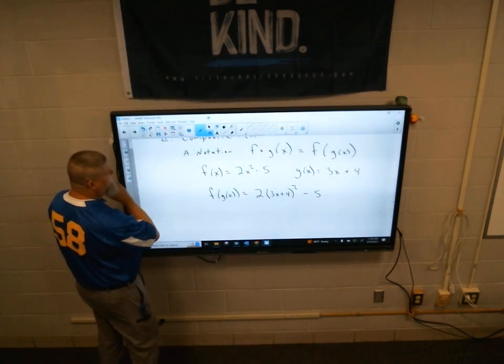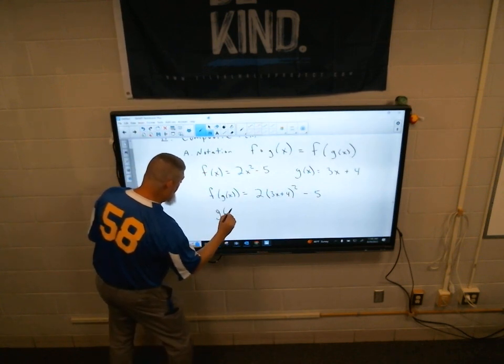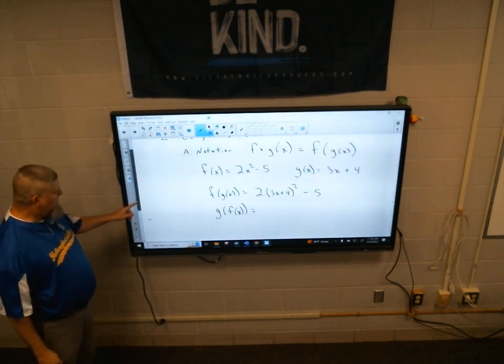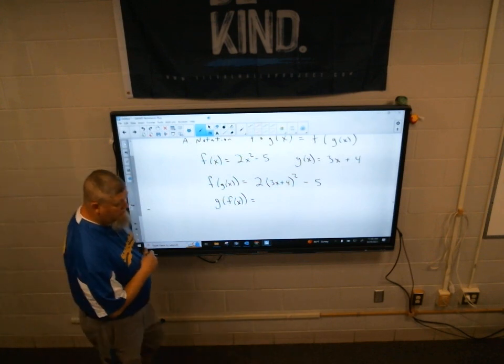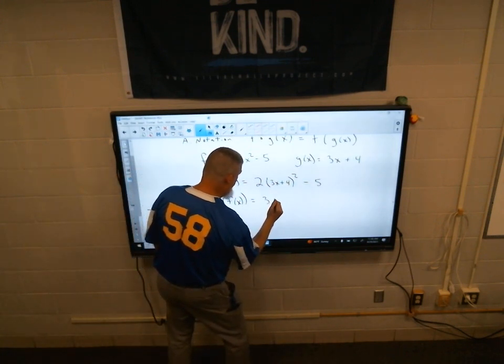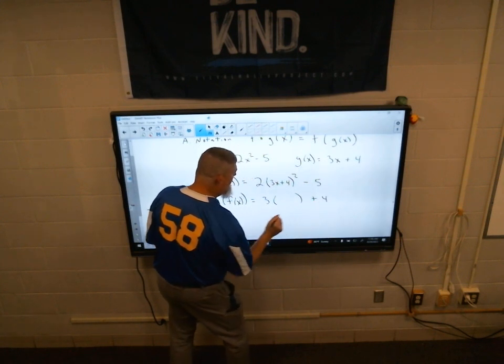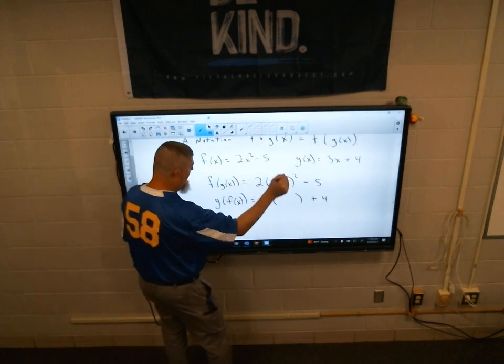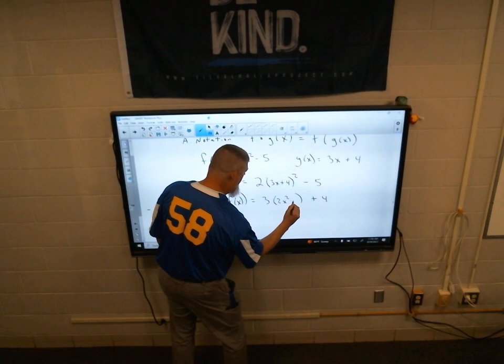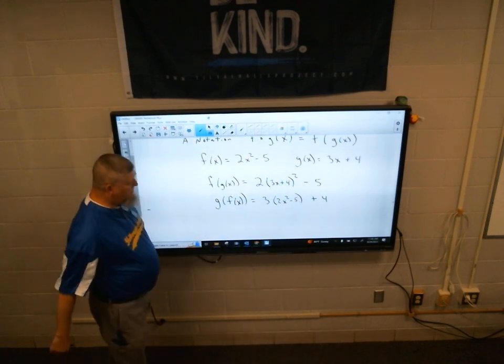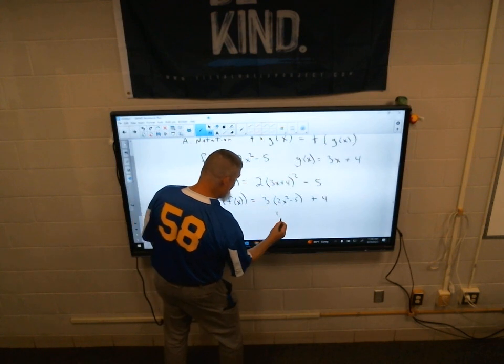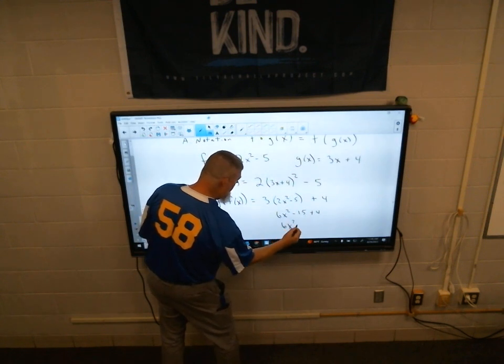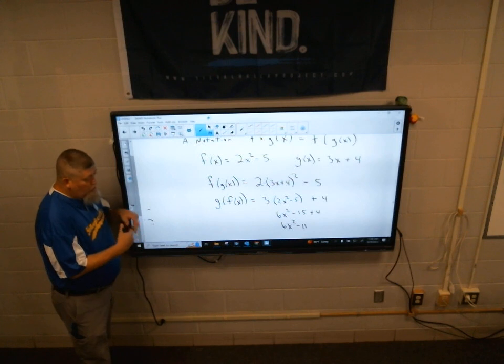Let's do it the other way. What if I said g of f of x? Now which function do I start with? I start with 3x plus 4. So, I'm going to start off with 3x plus 4 and then what goes in those parentheses? 2x squared minus 5. I plug in that function in here. 2x squared minus 5. And then you can distribute and this is actually pretty easy. 6x squared minus 15 plus 4 gives us 6x squared minus 11. It gives us a new function, a new quadratic.